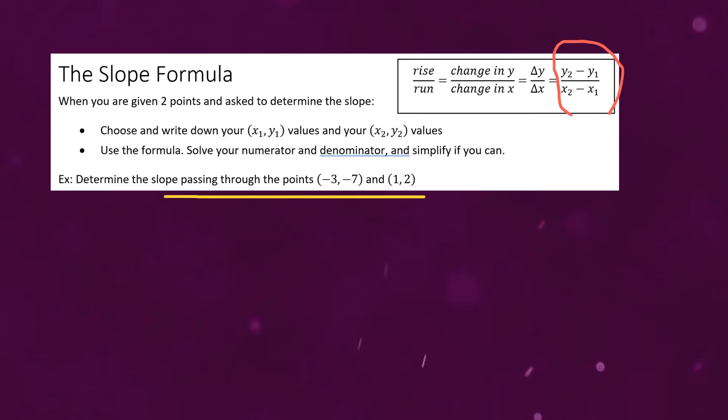And how that works is that it's the change in y over the change in x. Now you might be wondering what are these triangles for? Well the triangle is actually a Greek symbol. It's pronounced delta if you're curious. And it actually represents the change. It means to change something.